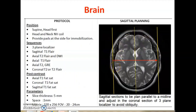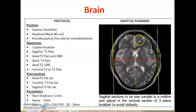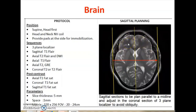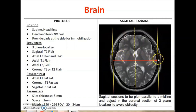This is how I planned: I took the three-plane localizer axial plane. Actually I took the Axial T2 to demonstrate the planning very clearly. It should be planned in a three-plane localizer and sagittal sections. It should be parallel to the midline and it should cover the parietal areas also.